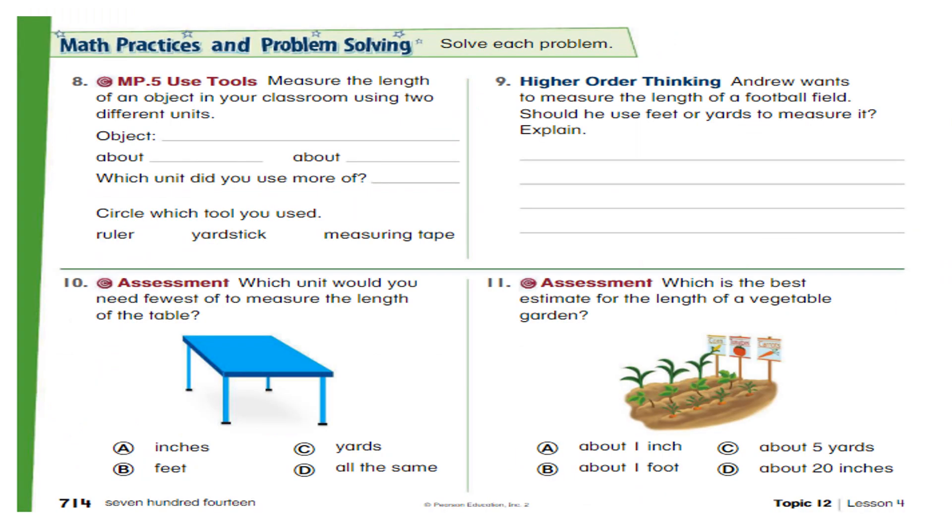The next page, you have to measure the length of an object in your classroom using two different units. So just choose any object which you have in your classroom. You can use a chair, a table, a whiteboard, your bookshelf, the window, the door, anything you want. And then you have to write the name of that object here.